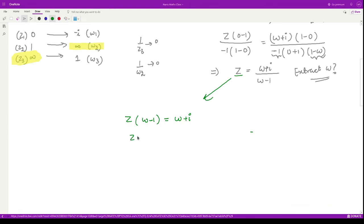We can collect the terms corresponding to w. We would have w times (z - 1), and on the right-hand side we would have i + z. So w would simply be (z + i)/(z - 1). This is our final answer.